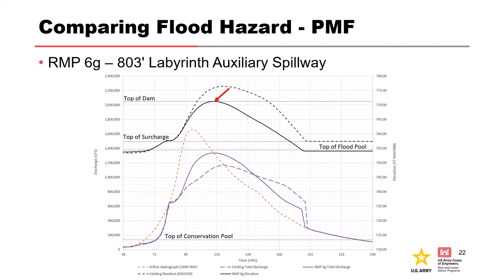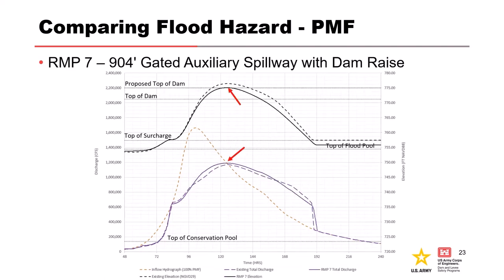RMP7 is the dam raise plus a whole new auxiliary spillway. It brings the PMF down to right at the top of the dam — they built it so the PMF is basically just passing right at the top of the dam. The outflow stays about the same; they're able to get a little more flow through and get the pool down while raising the dam up. So you're not really increasing outflow for non-breach events — you're building the dam up enough to pass the PMF and eliminate or exclude that failure mode. But you're basically building a new dam.